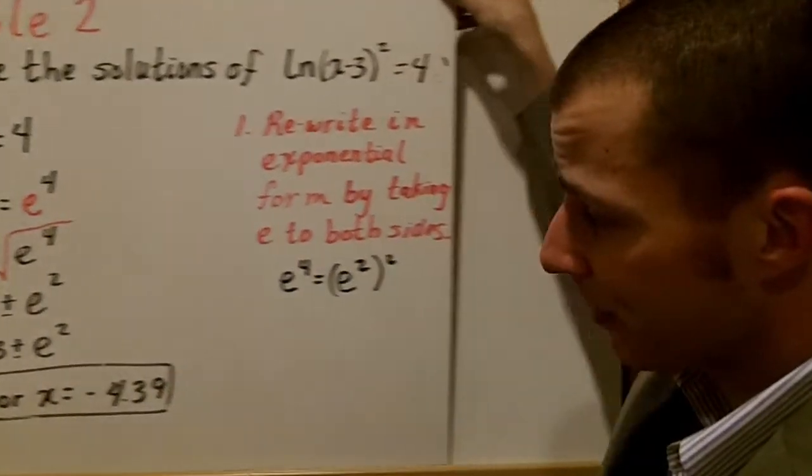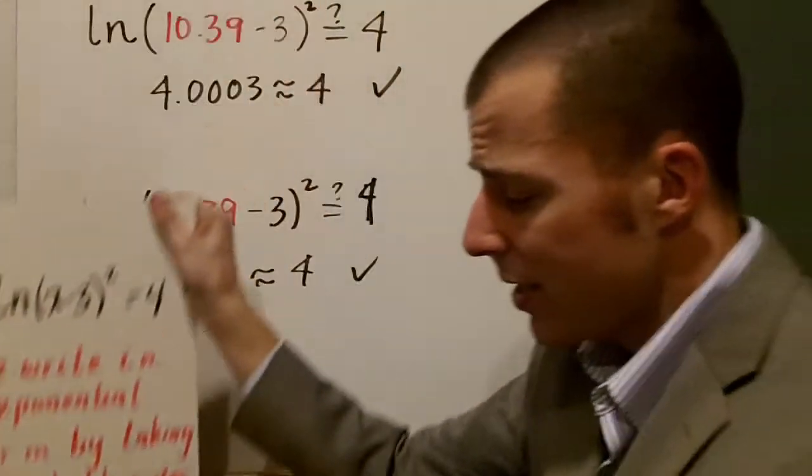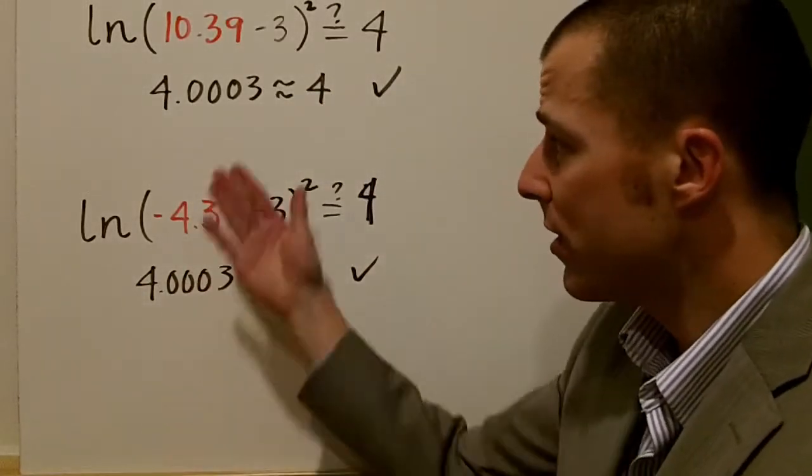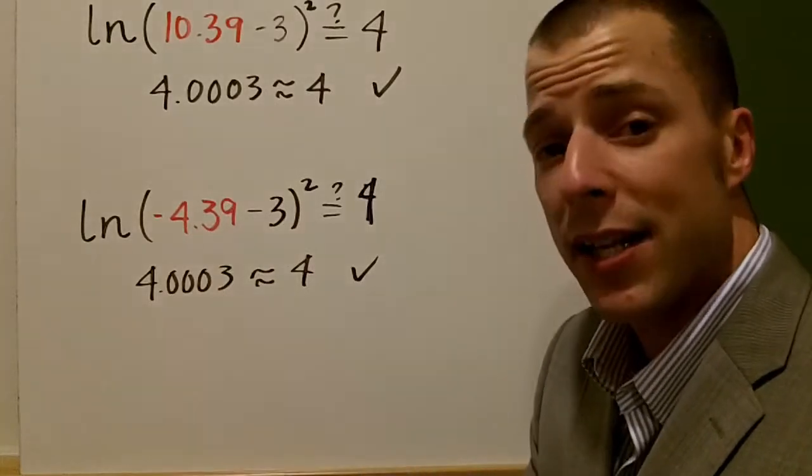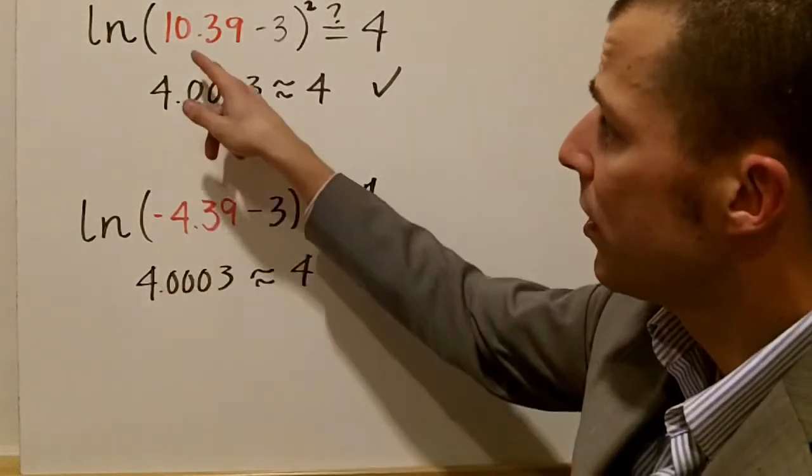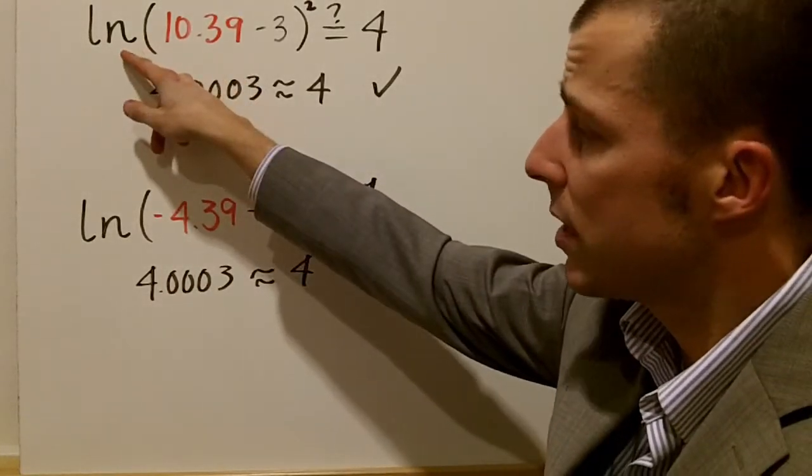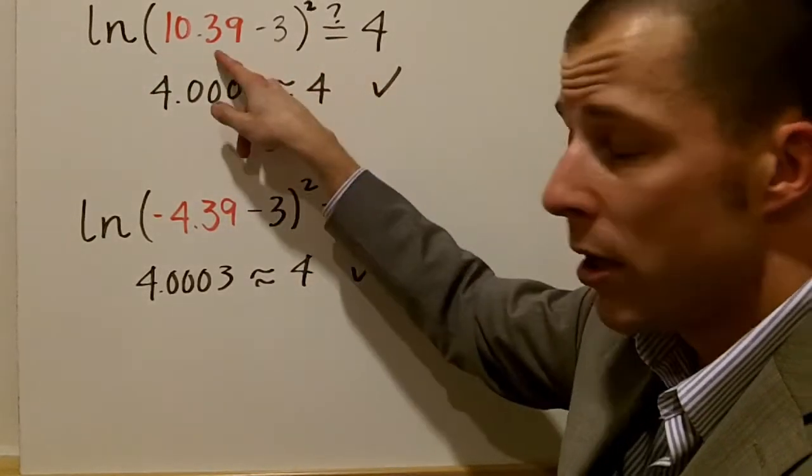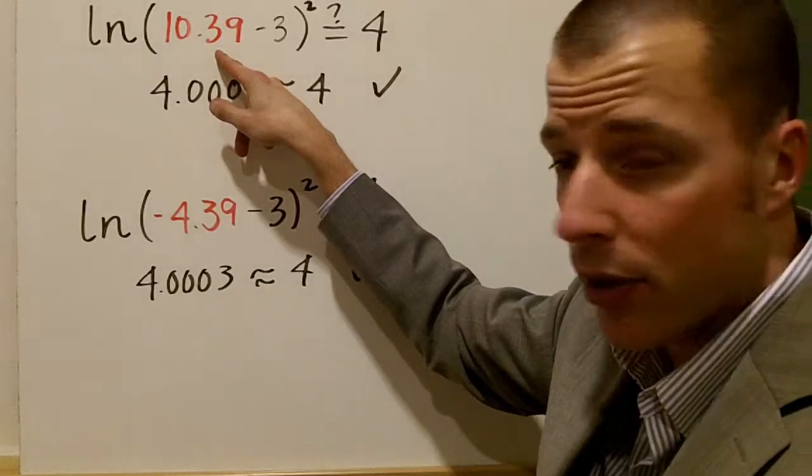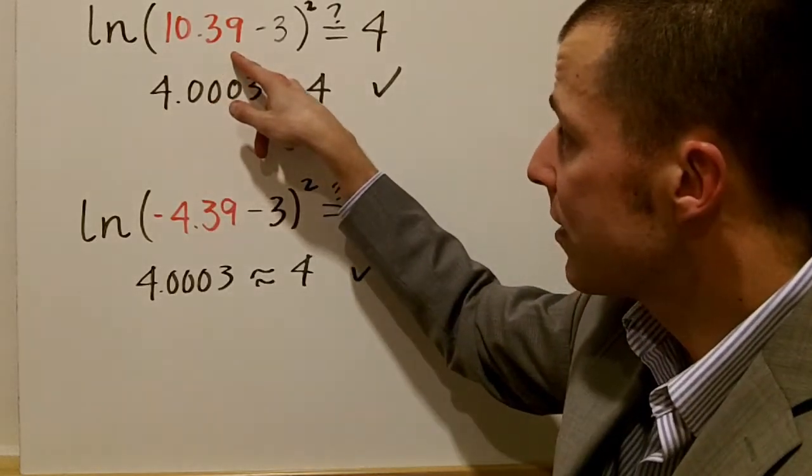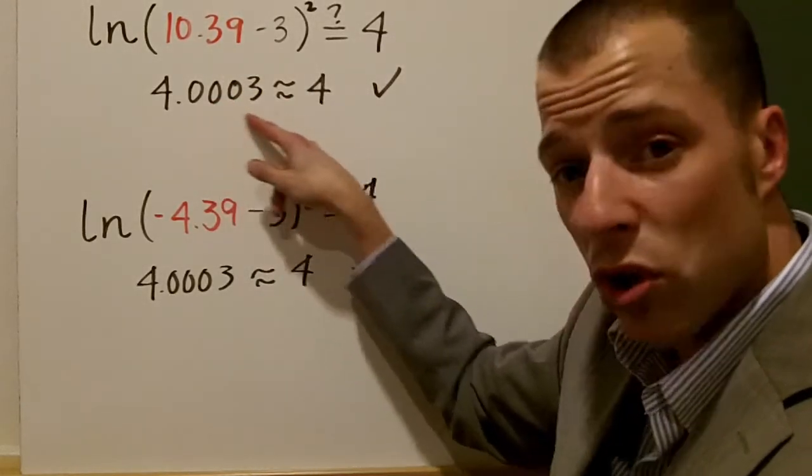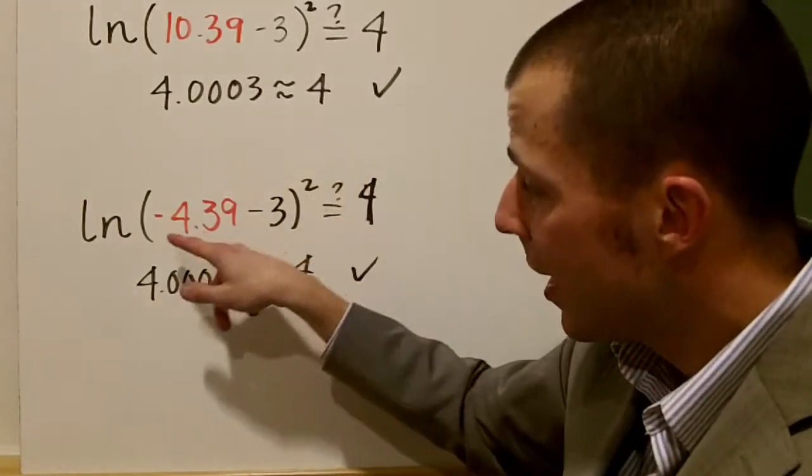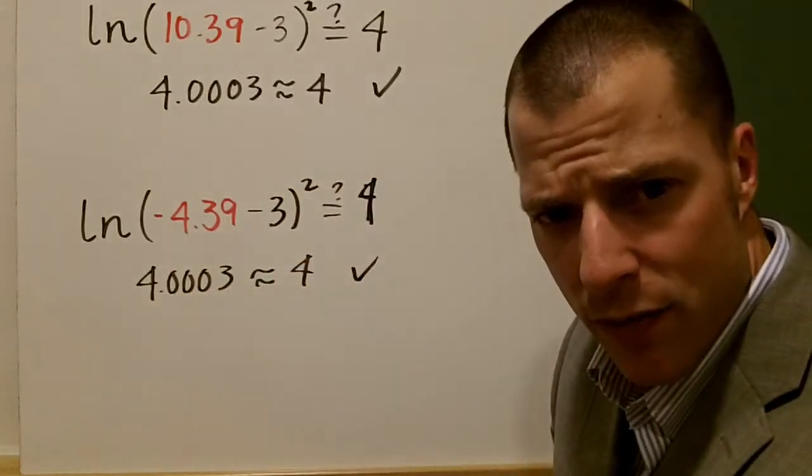So what we're going to do is we're actually going to check that answer because we always want to check for extraneous solutions. And what I want to show you here is that these answers are so close that it's okay they're a little off. So we plug in to the natural log of (x minus 3) squared. Does that equal 4? Well, plug in 10.39 in for x, and we get something that's so close to 4 that we're going to count it. That's okay. It's not extraneous.